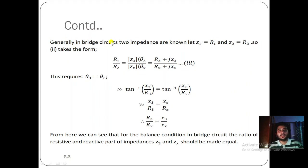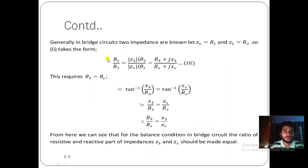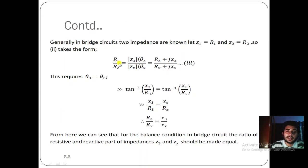Generally in a bridge circuit, two impedances are known. We have assumed Z1 = R1 and Z2 = R2 — that is, they are pure resistances. So equation two is written in terms of resistance only, without any reactive part in Z1 and Z2. For Z1 we write R1 and for Z2 we write R2, giving R1/R2 in polar and rectangular form.